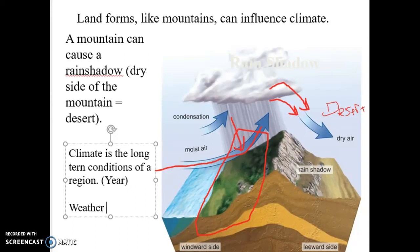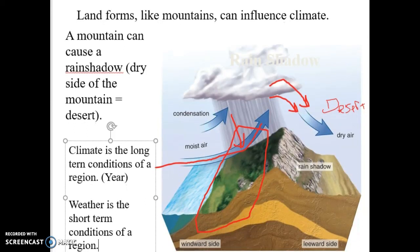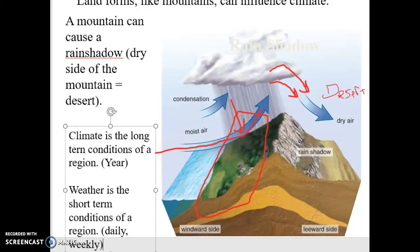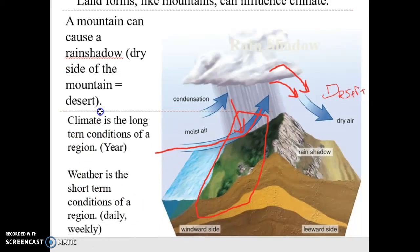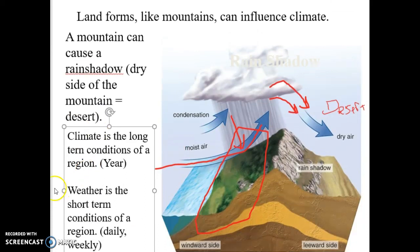Weather is the short-term conditions of a region, daily or maybe weekly. You watch the weather, what's it going to be like tomorrow? We're going to have 92 degrees and sunny, or we've got an 80% chance of showers. That's your weather. Climate is what we experience in Illinois over the course of the entire year, 12 months.